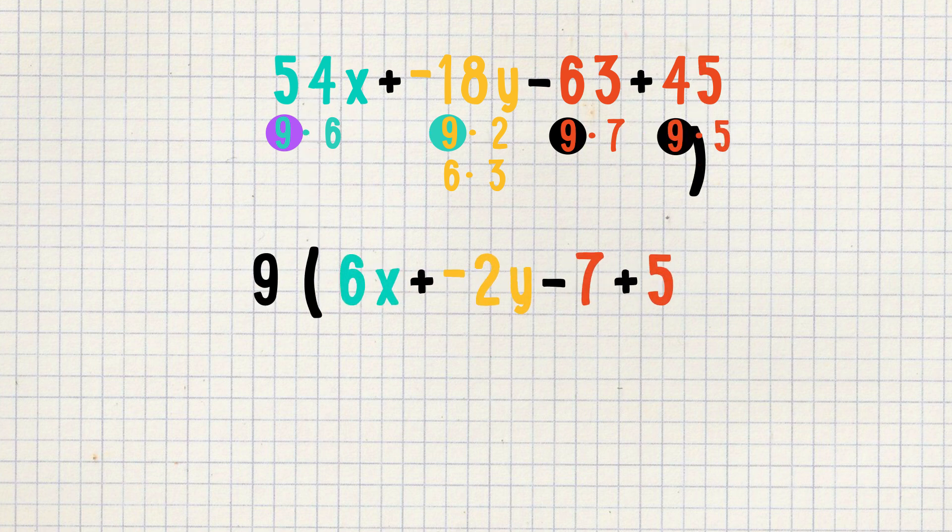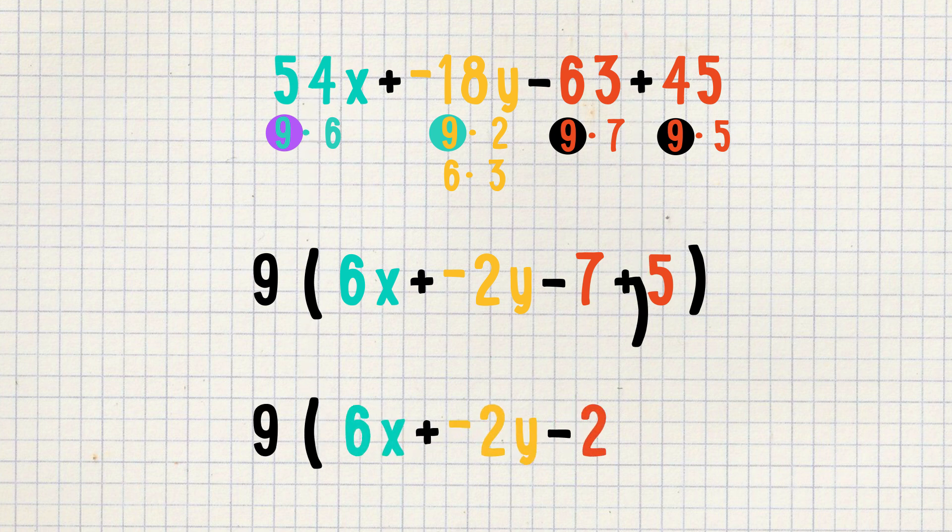So we end up with nine groups of the quantity 6x plus negative 2y minus 7 plus 5. Hey, the negative 7 and 5 are the same color, which we can add together to get a negative 2. Our simplified expression is nine times the quantity 6x plus negative 2y minus 2.